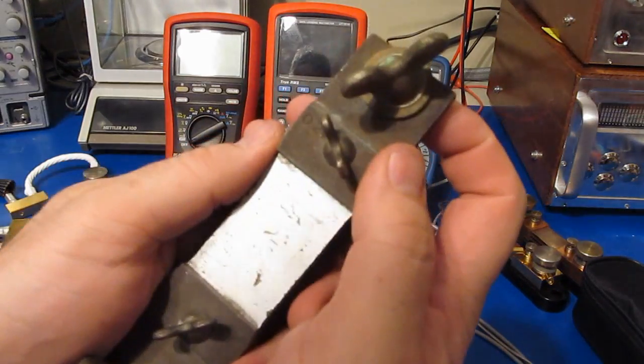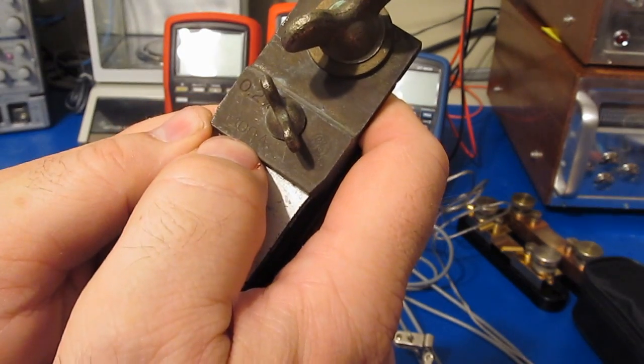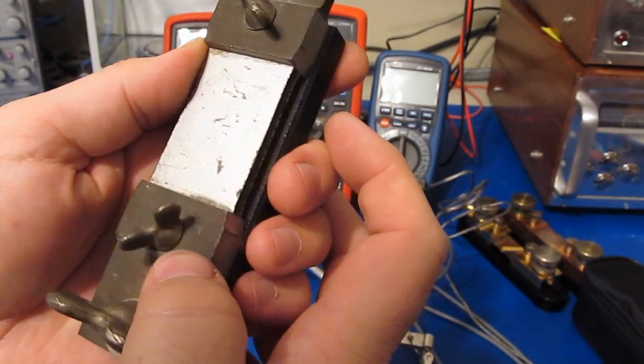Hello again. A friend of mine gave me this shunt. This was made by General Electric. This thing you can see is marked for 100 amps. That's at 50 millivolts.